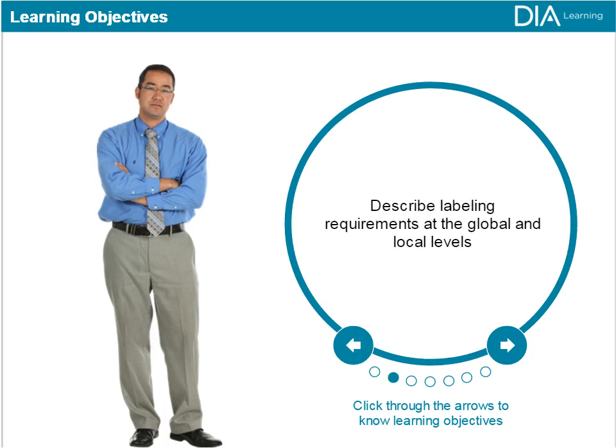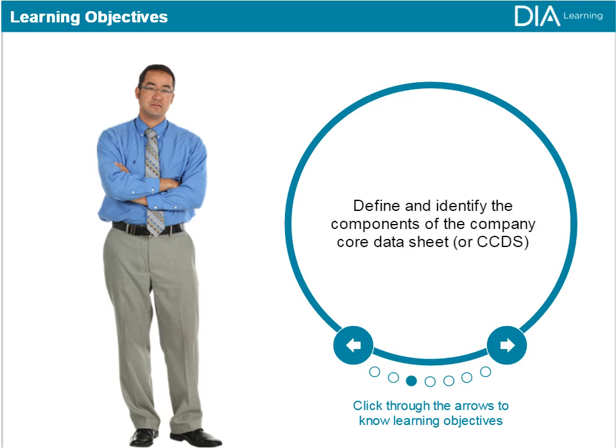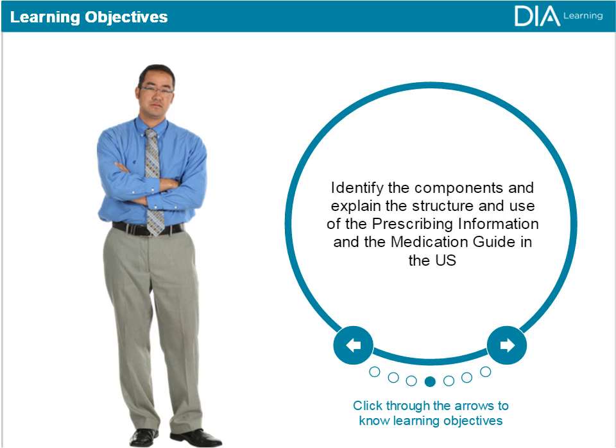Describe labeling requirements at the global and local levels. Define and identify the components of the Company Core Data Sheet, or CCDS. Identify the components and explain the structure and use of the prescribing information and the medication guide in the U.S. Identify the components and explain the structure and use of the prescribing information in the European Union.